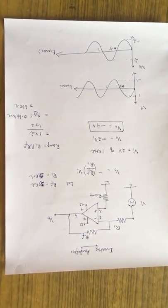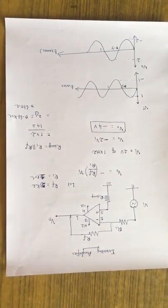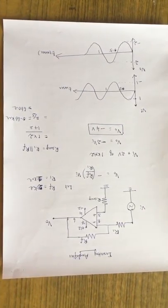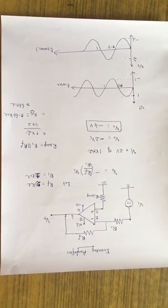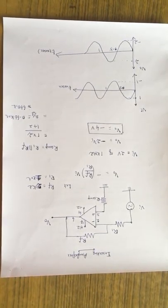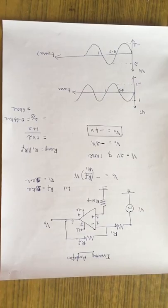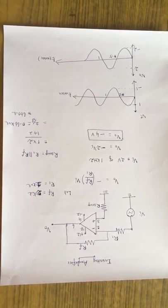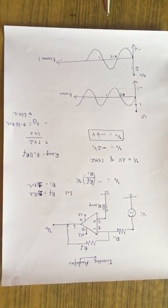The IC741 is an 8 pin IC. Pin number 2 acts as an inverting terminal, pin number 3 non-inverting terminal, pin number 7 and 4 the positive supply 12 volts and negative supply of minus 12 volts is given and pin number 6 we are taking the output.